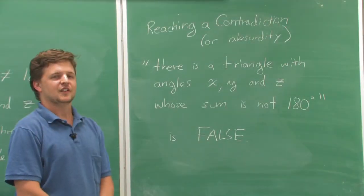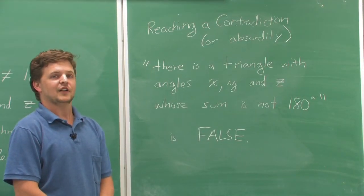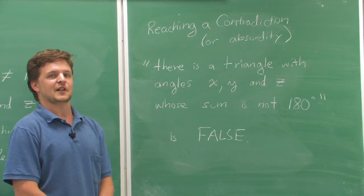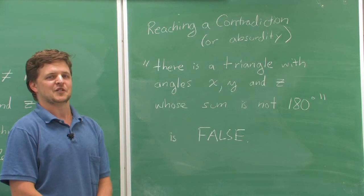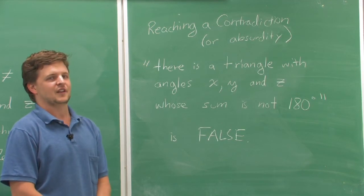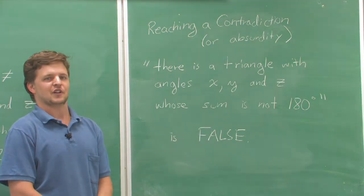The third option is to write down exactly the opposite of your original statement and then show that the opposite of your original statement is false. This is what we call reaching a contradiction or reducing to absurdity.